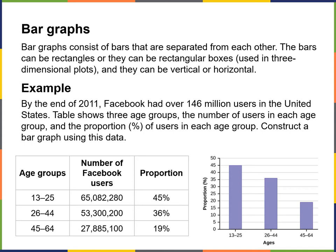Here's an example of a bar graph. By the end of 2011, Facebook had over 146 million users in the United States. The table shows three age groups, the number of users in each age group, and the proportion of users in each age group. If we were making a bar graph, realistically all we need are categories — the age groups along the bottom — and the proportion percentages on the left.